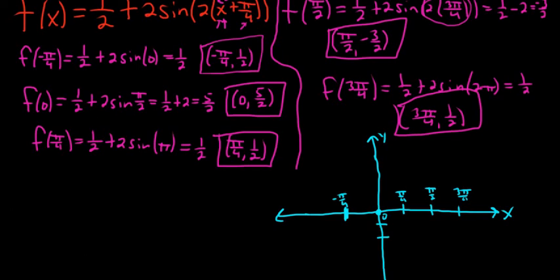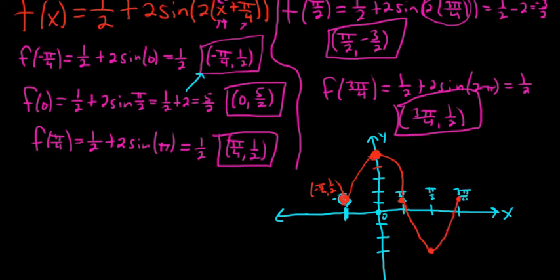Using 1/2 increments on the y-axis: negative 3/2 at the bottom, then -1, -1/2, 0, 1/2, 1, 3/2. The first point is (-π/4, 1/2) — that red dot here. The next one is (0, 5/2), which is pretty high up. Then (π/4, 1/2) down here. Then (π/2, -3/2) down here. And (3π/4, 1/2) up here. All we do now is connect the dots and make a curve like that. That's pretty good — that completes it.